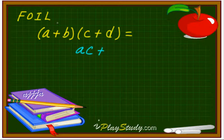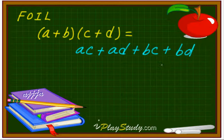Now, outer one, outside A and D. That's why AD. Plus, now inside one, which is inner. B and C. BC. Plus, the last one. So B and D. That's it.